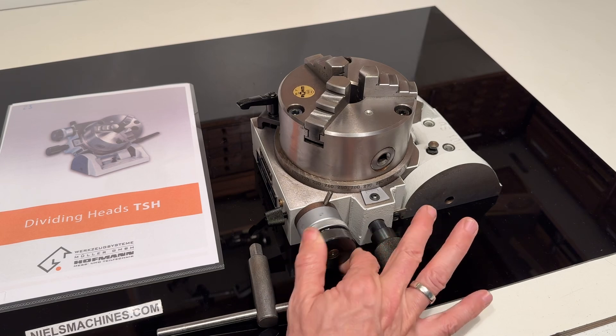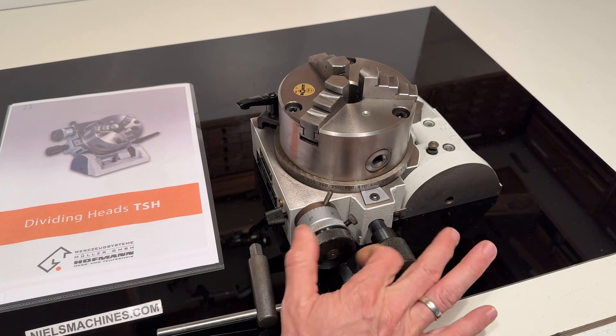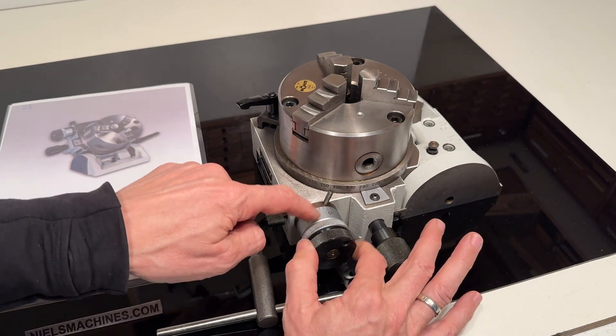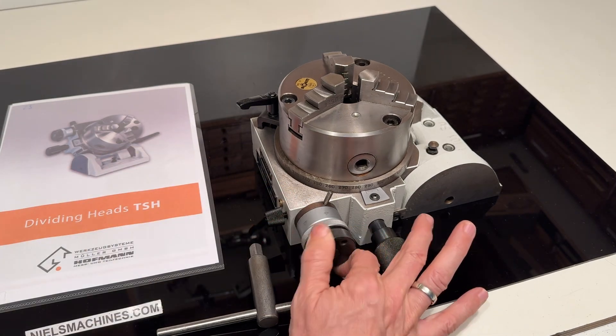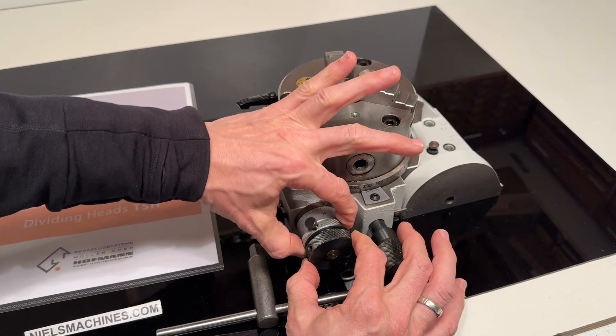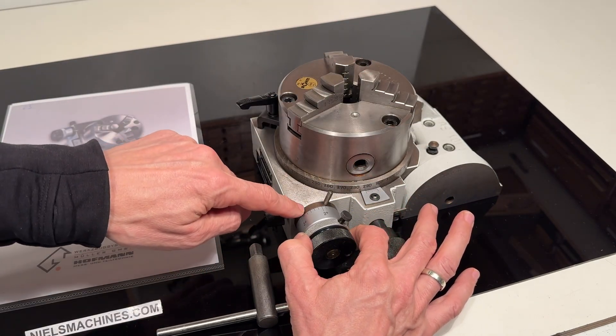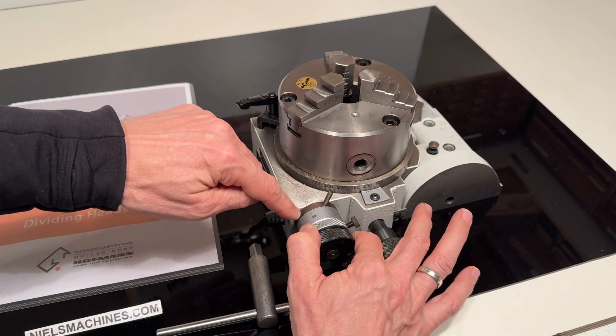Let's move it around. So it has the possibility for indirect dividing over here. You can move and put this one to zero. So there is 1-degree, 2-degree, 3-degree.